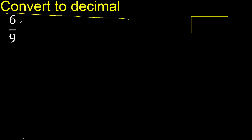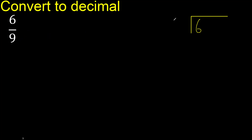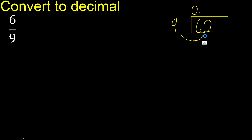6 divided by 9. Since 6 is less than 9, we complete it by adding 0 here — 0 point. 60 is not less, so we proceed with 60.